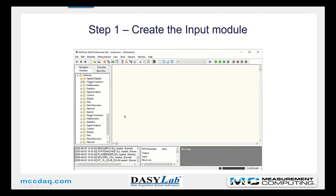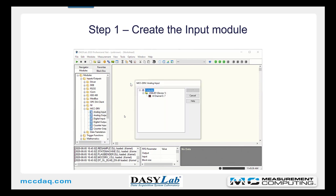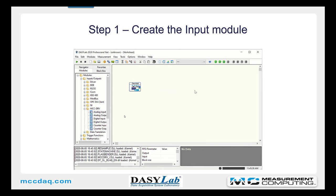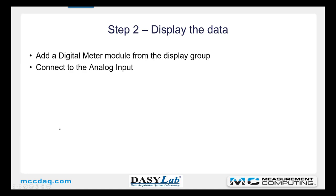First, create the analog input by selecting it from the input-output group. Drop it onto the work area. It's going to prompt you for the channel group. Select the channel group and click OK. The next step is to display the data. You'll create a digital meter module from the display group, and then connect it to the analog input module.